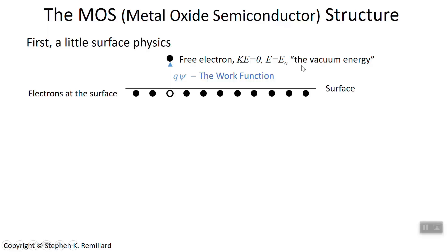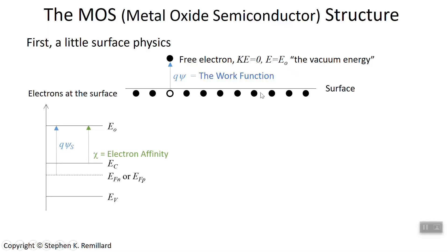We'll continuously refer to the vacuum energy, E sub zero, from now on. That's the work function — the same work function from the photoelectric effect. One other material property is the electron affinity, which is the difference in energy between the conduction band edge and the vacuum energy. More than the work function, electron affinity is a property of the material itself. The work function depends on doping — it's the difference between Fermi energy and vacuum level — so if you dope differently, you move the Fermi energy and change the work function.